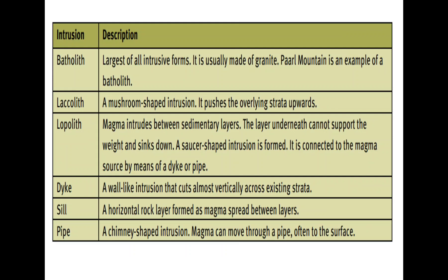The lopolith — in terms of its formation, magma intrudes between sedimentary layers, then the layers underneath cannot support the weight, so it sinks down. That is why it forms a saucer-shaped intrusion. It is connected to the magma source by means of a dyke or a pipe.